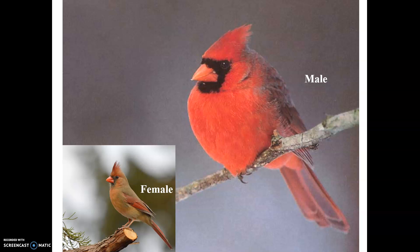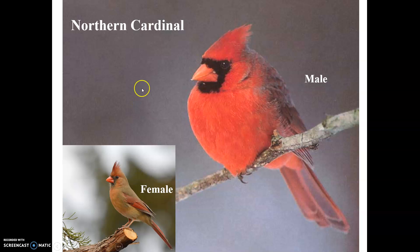The first bird we'll be going through in this video is the northern cardinal. The northern cardinal is usually one that people think they can identify very easily, but it's not always the case. Let's look at it from a birding viewpoint. We want to be able to identify this beyond just 'it's a red bird.' Obviously it's a red bird, but that's the males.